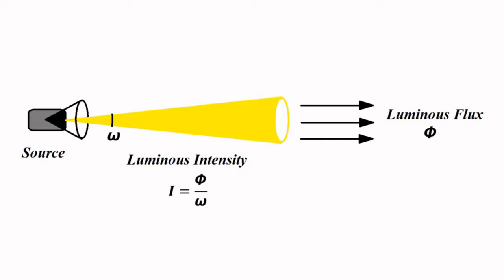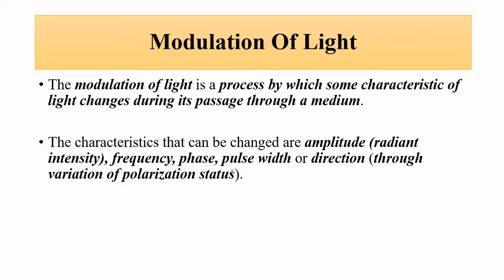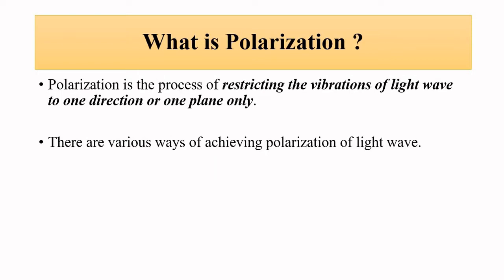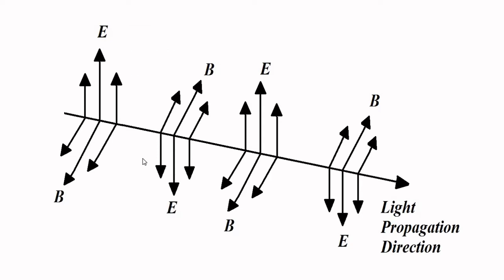Other ways of altering light characteristics include changing the frequency, phase, pulse width, or direction, which depends on the polarization status. Polarization is basically restricting the vibrating electric vectors of a light wave to one plane or one direction.